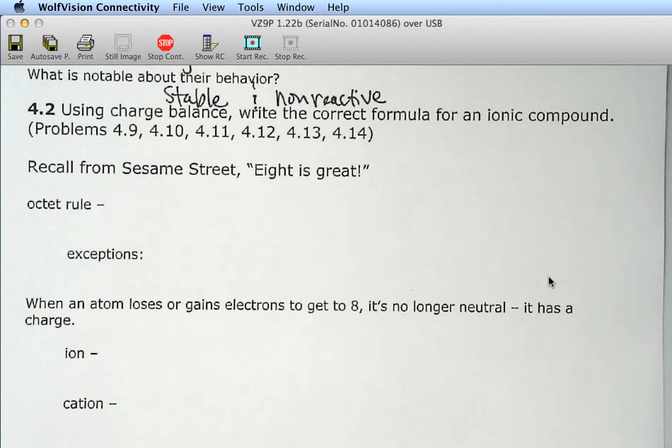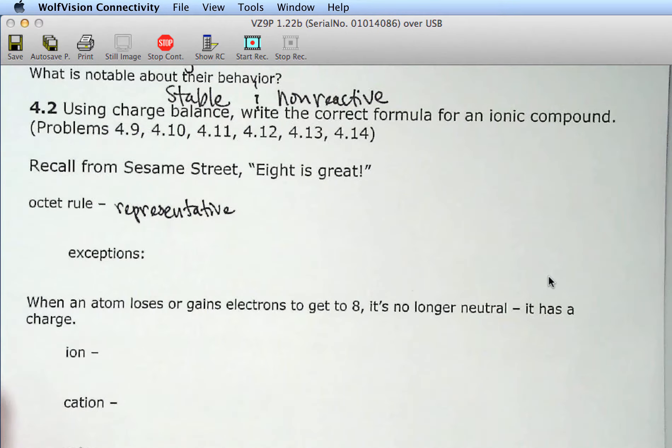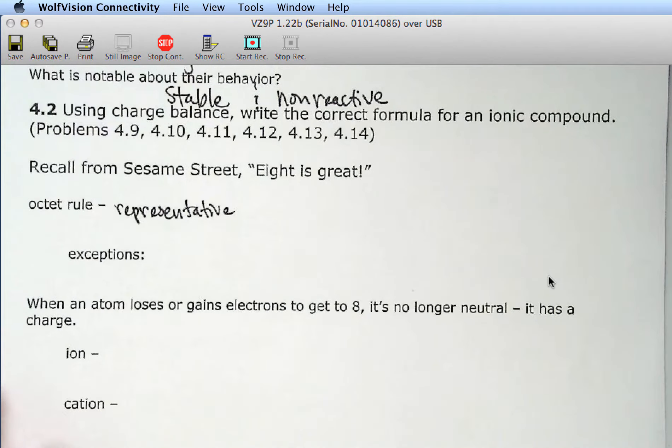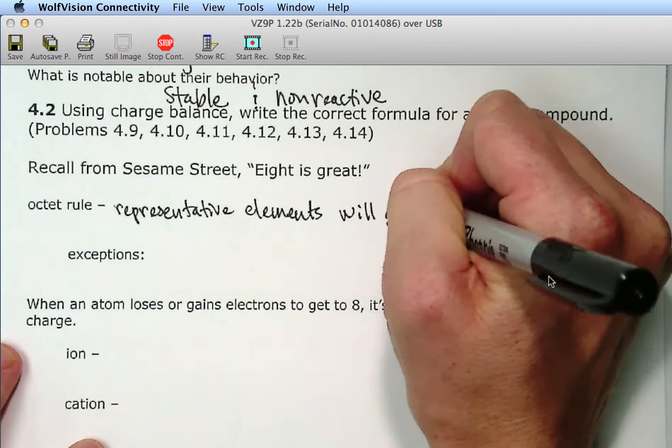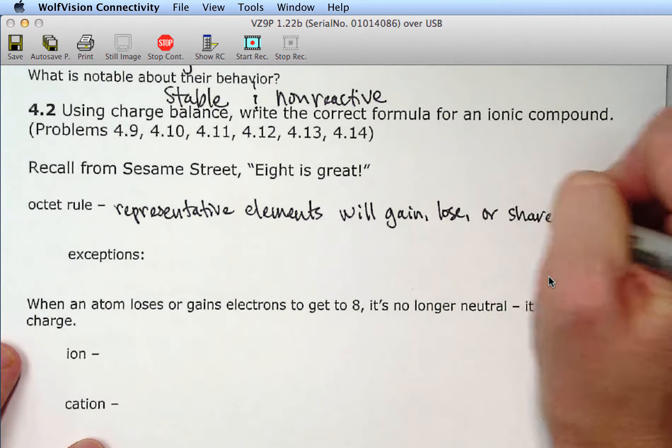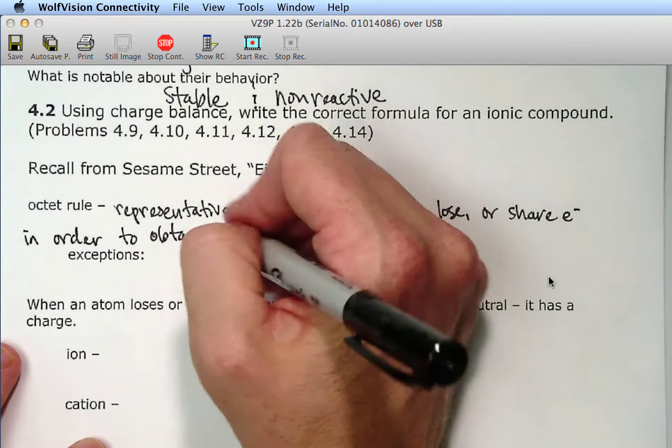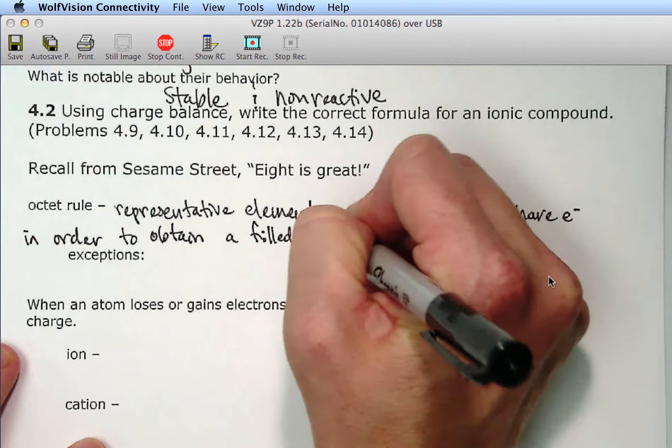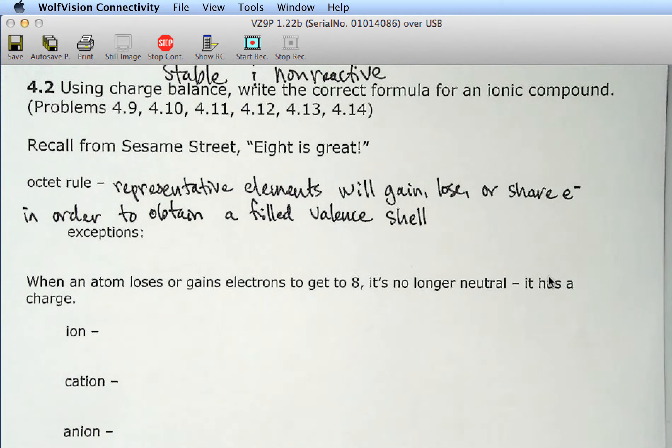So, noble gases are stable and non-reactive because they have eight electrons. So, that brings us to the octet rule. And it has to do with eight. Eight is great. I don't remember from Sesame Street. You learn a lot from that.